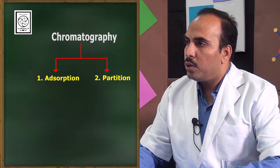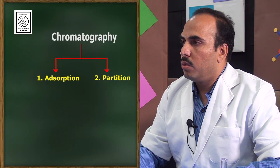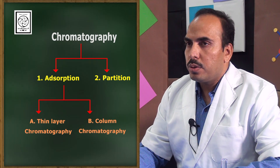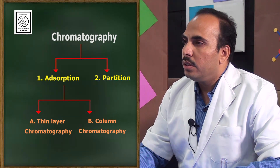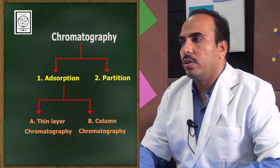Chromatography is mainly divided into adsorption chromatography and partition chromatography. Adsorption chromatography is further classified into thin layer chromatography and column chromatography. What is the difference between adsorption and absorption? Absorption occurs in the bulk of a material, while adsorption, which we are using here, occurs on the surface of a material — it is a surface phenomenon.